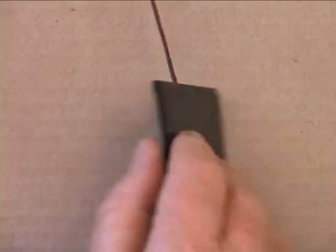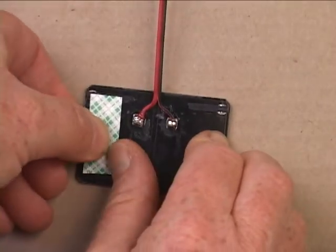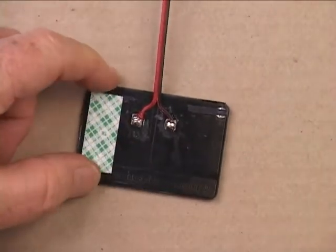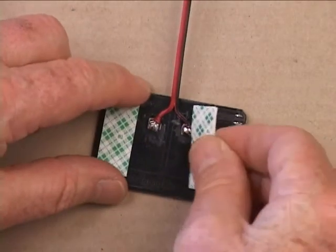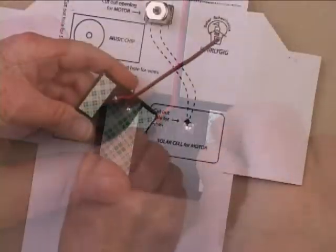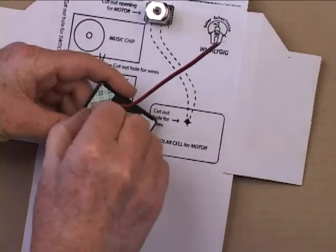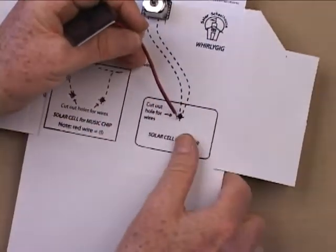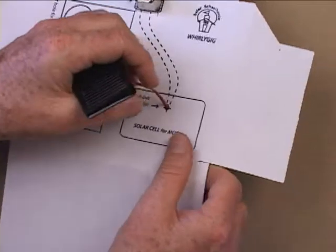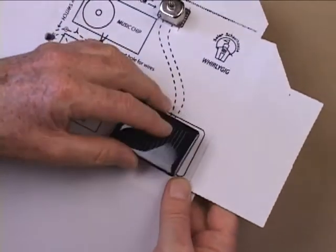On the back of the small solar cell, press strips of double-sided foam tape along both sides of the center wiring. Then peel the backing off the foam tape. Insert the cell's wires through the hole in the lower right side of the box and press the cell in place within its outline.